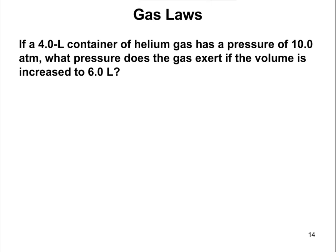The goal here is to first write down what you know. You have a 4.0-liter container of helium gas at 10.0 atmospheres — those are your initial conditions. The volume is increased to 6 liters, so we need to find what the pressure becomes.